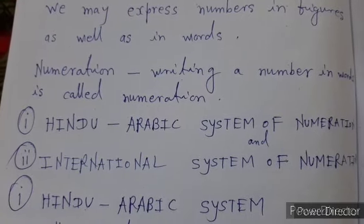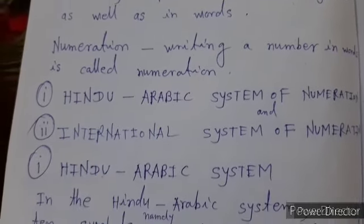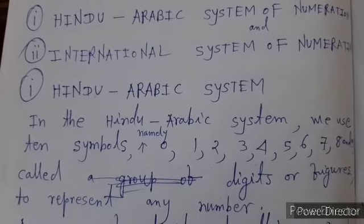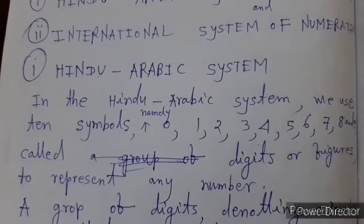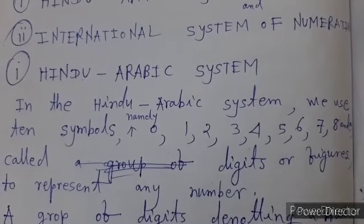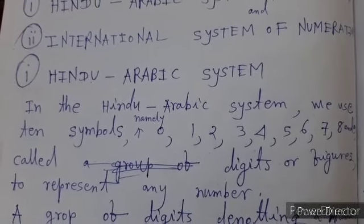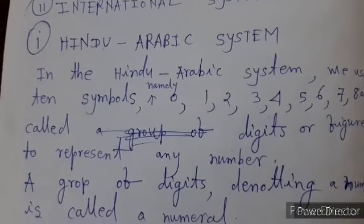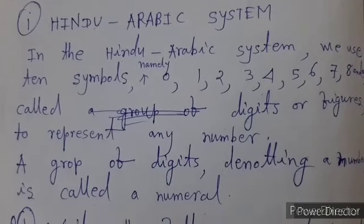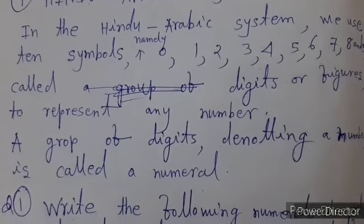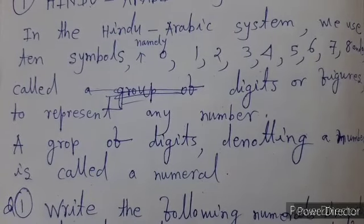Hindu-Arabic system. In the Hindu-Arabic system, we use ten symbols namely 0, 1, 2, 3, 4, 5, 6, 7, 8, 9 called digits or figures to represent any number. A group of digits denoting a number is called a numeral.